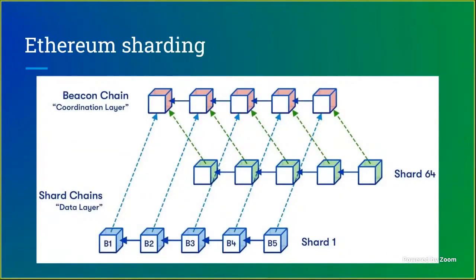A quick summary of the Ethereum sharding design: there's a beacon chain and a bunch of shard chains, currently 64 but likely to increase over time. The shard chains just have data — they're a data availability space. They exist to provide space for rollups to publish their data, guaranteed by consensus through data availability sampling. Projects that are currently rollups with data on mainnet could instead be rollups with data on shard chains, increasing their scalability by something like a factor of 100.